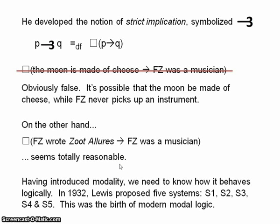And in 1932, Lewis proposed five different systems, S1 through to S5. If you've been watching my series on modal logic, we've already encountered S4 and S5, and I'll be discussing some of the others quite soon. So, that was pretty much the birth of modern modal logic. This is where modern modal logic came from. It came from this problem of the conditional, and Lewis's attempt to solve it.